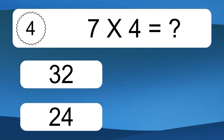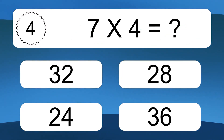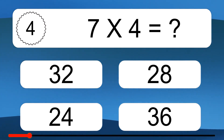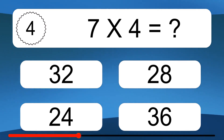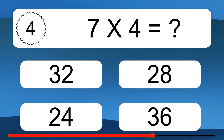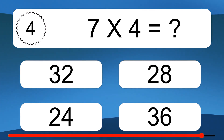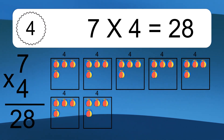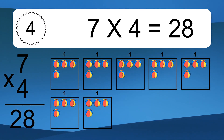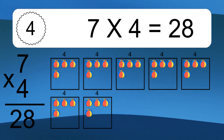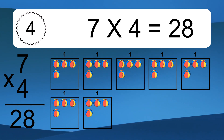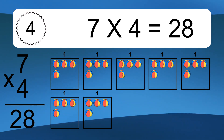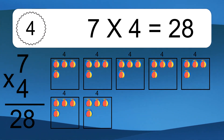7 times 4 equals what? 7 times 4 equals 28. We have 7 boxes, and each box has 4 colorful balls inside. If you count all the balls in all the boxes together, you will have 7 times 4 balls. This equals 28 balls.